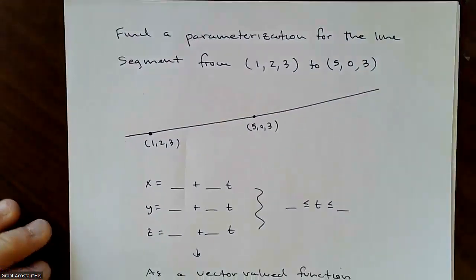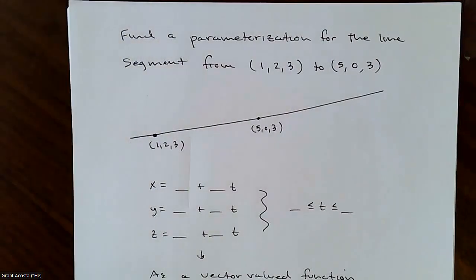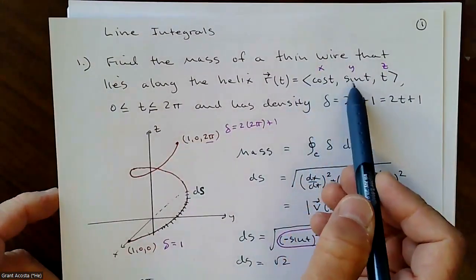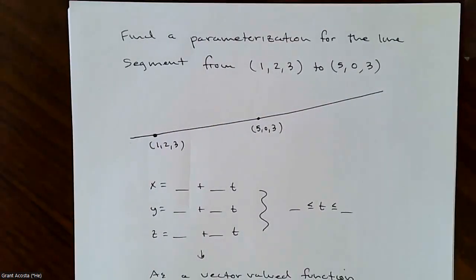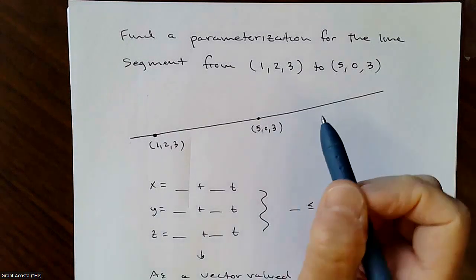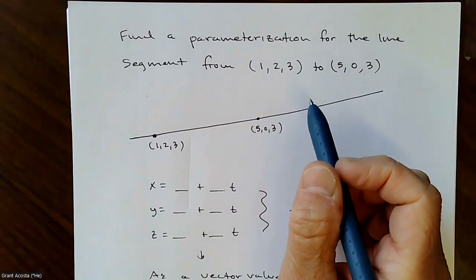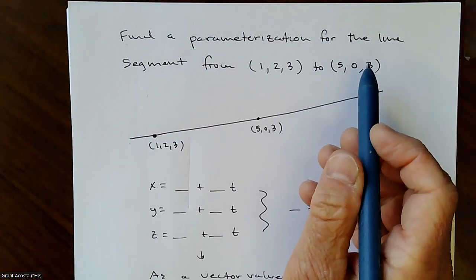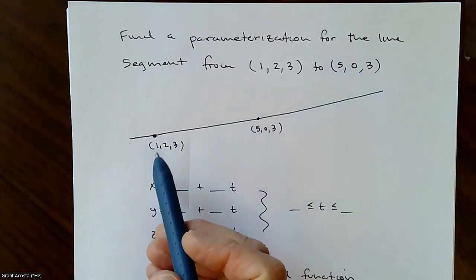A reminder: in the example we just did, the equation of the curve was given — it was a helix. But a lot of problems in this section require you to come up with your own parameterization, your own position function, your own vector function r(t). A very common thing you'd be expected to parameterize yourself is a line segment.